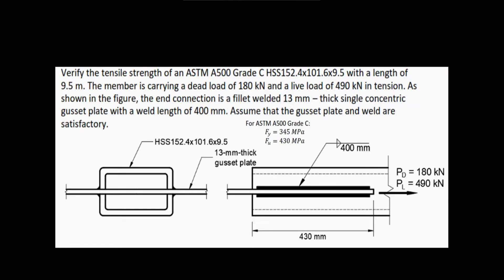Verify the tensile strength of an ASTM A500 grade C hollow structural steel 152.4 by 101.6 by 9.5 with a length of 9.5 meters. The member is carrying a dead load of 180 kN and a live load of 490 kN in tension. As shown in the figure, the end connection is a fillet welded 13mm thick single concentric gusset plate with a weld length of 400mm. Assume that the gusset plate and weld are satisfactory.